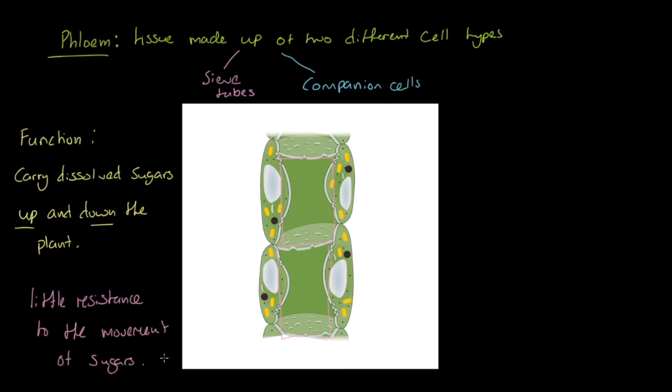A little like our xylem, because of the absence of these typical cell structures such as a nucleus, alone this cell would not be able to live. That is where the companion cells come in. The companion cells are connected by pores to the sieve tubes. They have lots of mitochondria. Importantly, they can control the function of both cells.